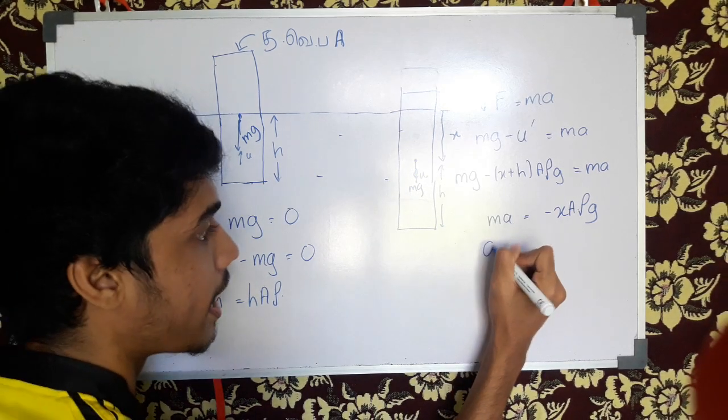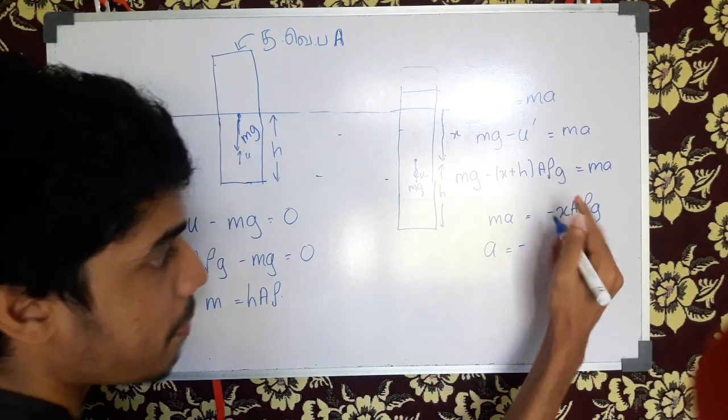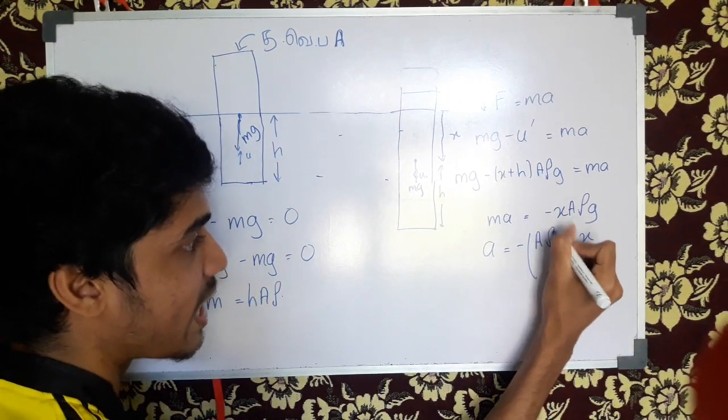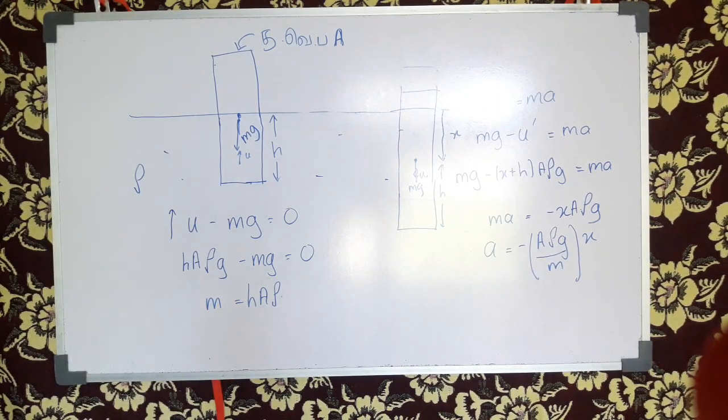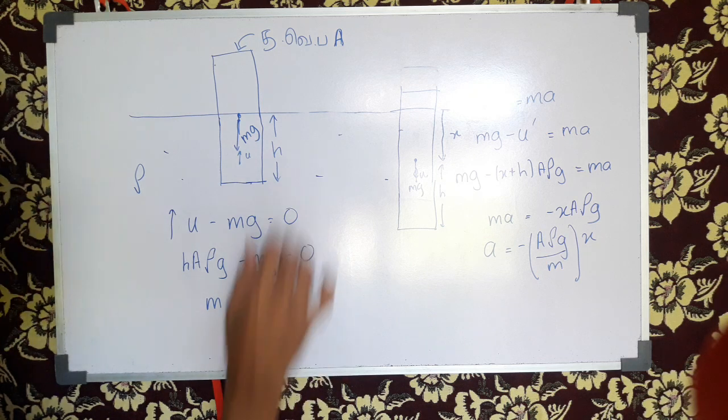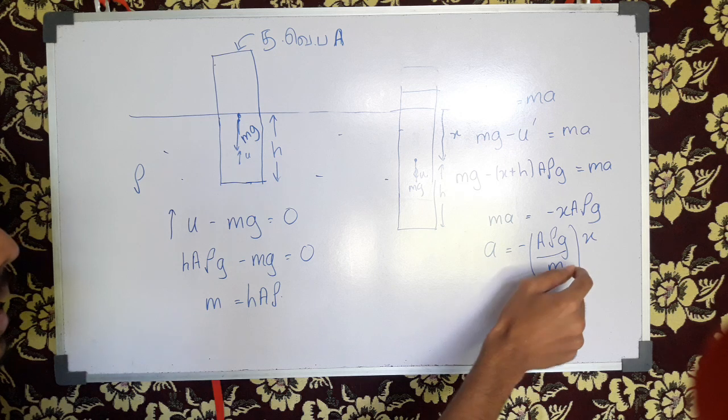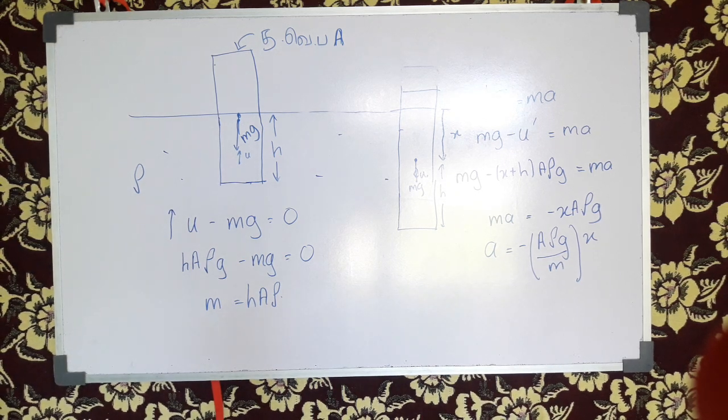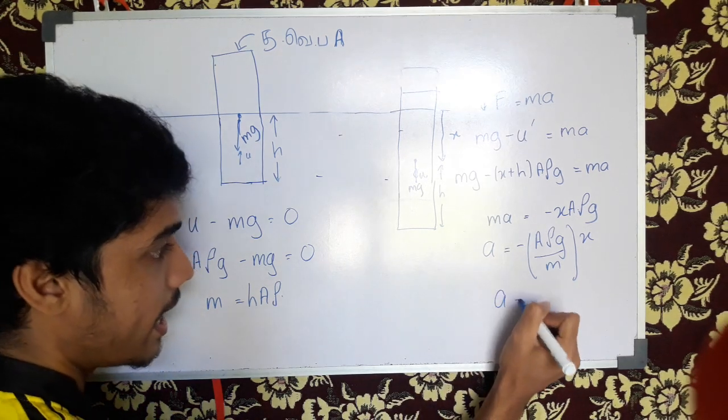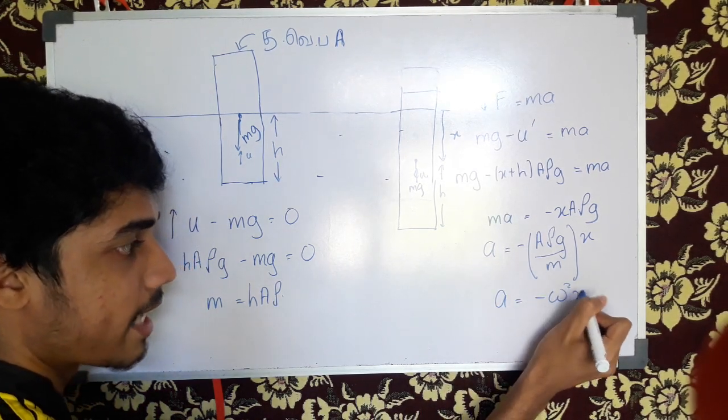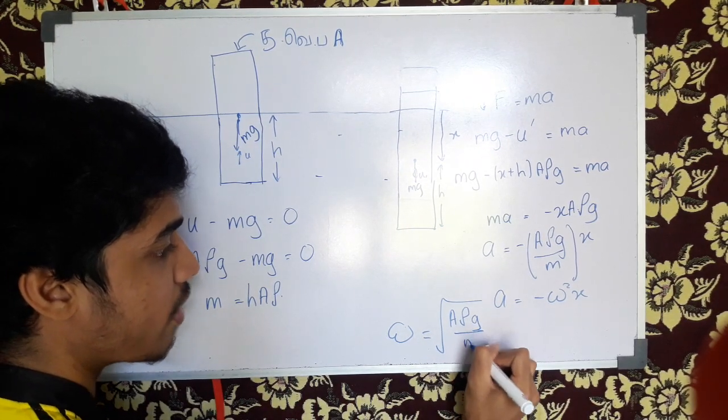Now we will set our a equals minus omega squared x. So if we go here, a has inside, then minus x to have minus. So the omega squared will be. This is the equation. So a equals minus omega squared x. So omega is going to be root of A ρ g over m.